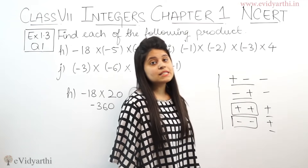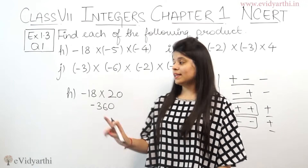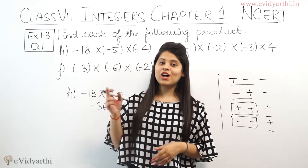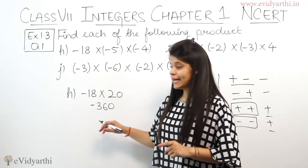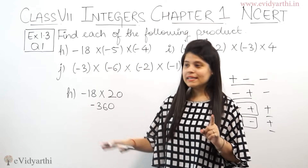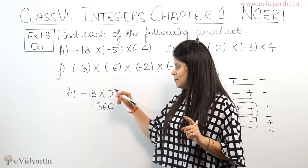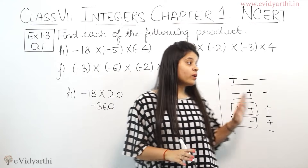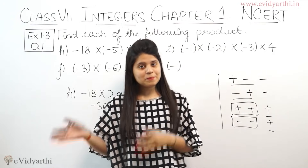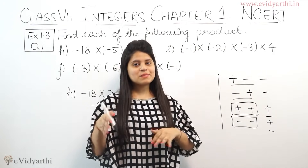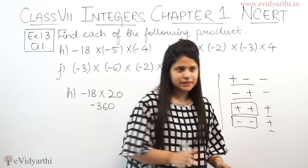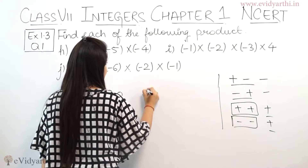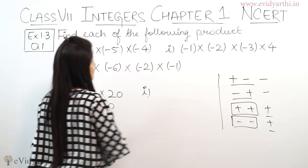One mistake people often make here: in subtraction and addition we are used to giving the sign of the bigger number. But in multiplication you do not do that — do not see that 20 is bigger and has a plus, so give plus. In multiplication, follow the rule: plus × minus = minus, minus × minus = plus, and so on.